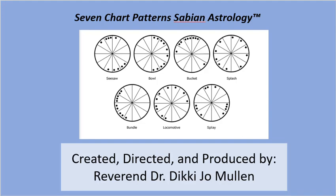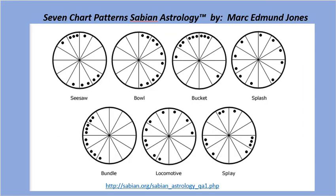Seven birth chart patterns, referred to as seven chart patterns in Sabian astrology, created, directed, and produced by Reverend Dr. Dickie Jo Mullen. In this video, Dr. Mullen will use Mark Edmund Jones's work, and you'll notice an address at the bottom that you can access on the internet for each of the seven chart patterns that she will explain in detail. Dr. Dickie Jo Mullen will now proceed to explore how these patterns affect one's birth chart.